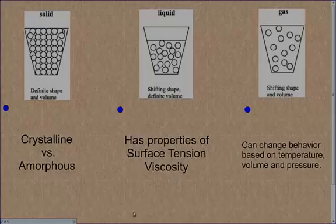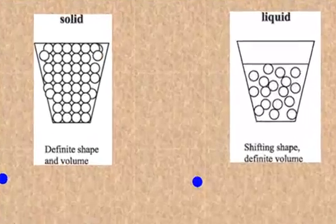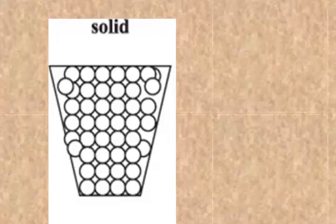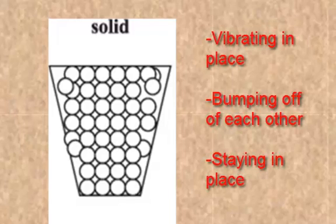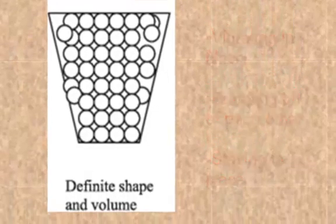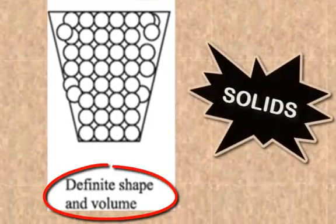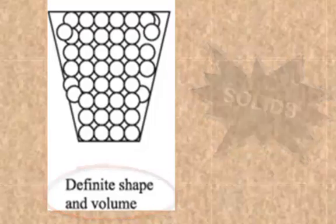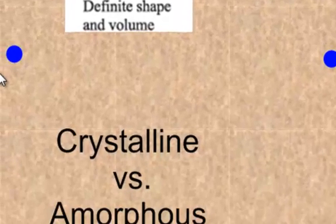The first state of matter we're going to focus on is solids. If you can see the picture, the little balls are actually vibrating in place and kind of bumping off each other, but they're staying in place. Solids have a definite shape and a definite volume, meaning you can't really change the shape of a solid unless you melt it, but then that would change the state. So solids have a definite shape and a definite volume.